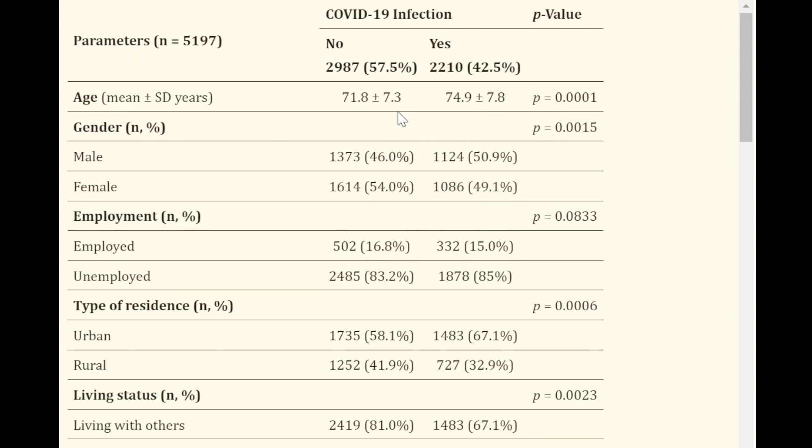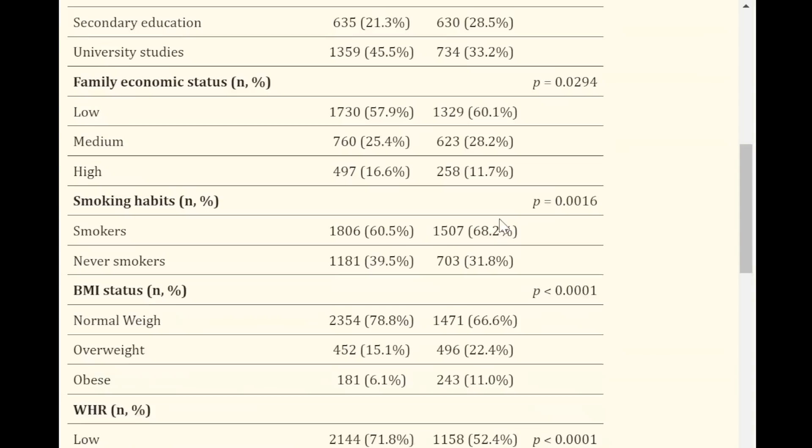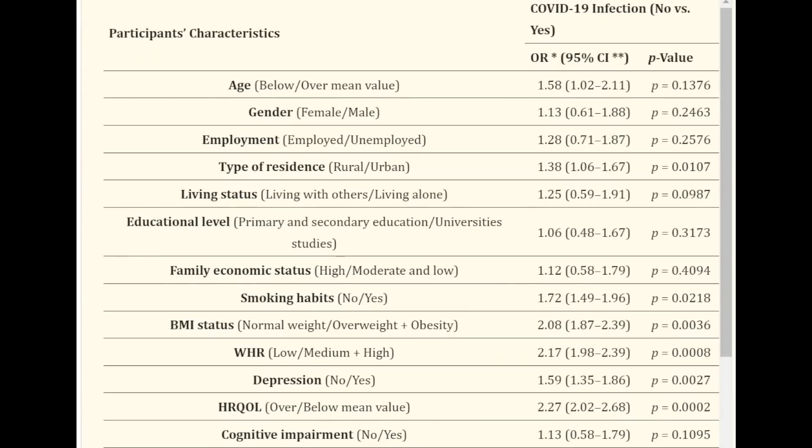For instance, age is going to sort towards yes on COVID-19 infection. Being male is going to sort to yes on COVID-19 infection. You can see a number of these in terms of residence, living status, educational level, smoking habits, BMI. But the key here is to understand that we need to look at the multi-regression analysis. This is the multivariate analysis assessing whether COVID-19 infection may independently be affected by sociodemographics, anthropometrics, and lifestyle factors in this population.